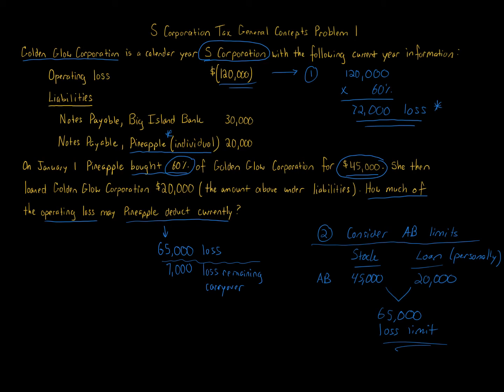That $7,000 continues to carry over and can eventually be taken as basis increases — for example, from income allocations, additional contributions, or taking on more personal liabilities. There will be another problem covering the ordering rules: do we increase the loan basis or stock basis first when there is income? That ordering is very important as well.